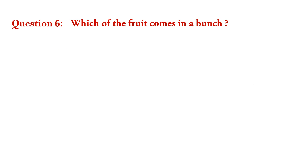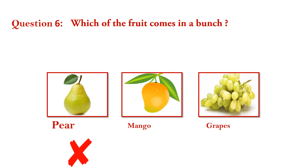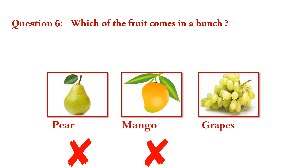Question number 6. Which fruit comes in a bunch? Pear — wrong. Mango — wrong. Grapes — right. Answer is grapes.